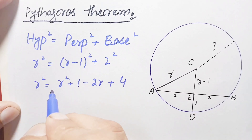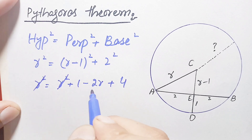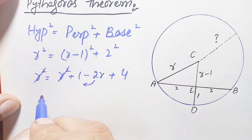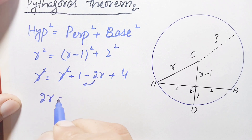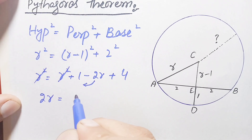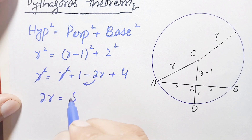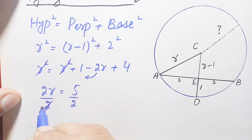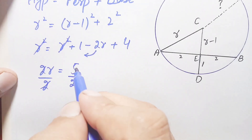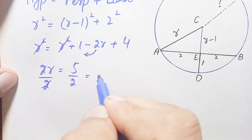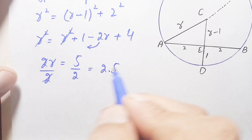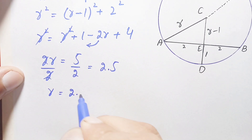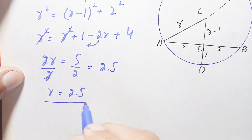The r² terms on both sides cancel. Moving the −2r to the right hand side gives positive 2r, so 2r = 1 + 4 = 5. Dividing both sides by 2 gives r = 5/2 = 2.5 units.